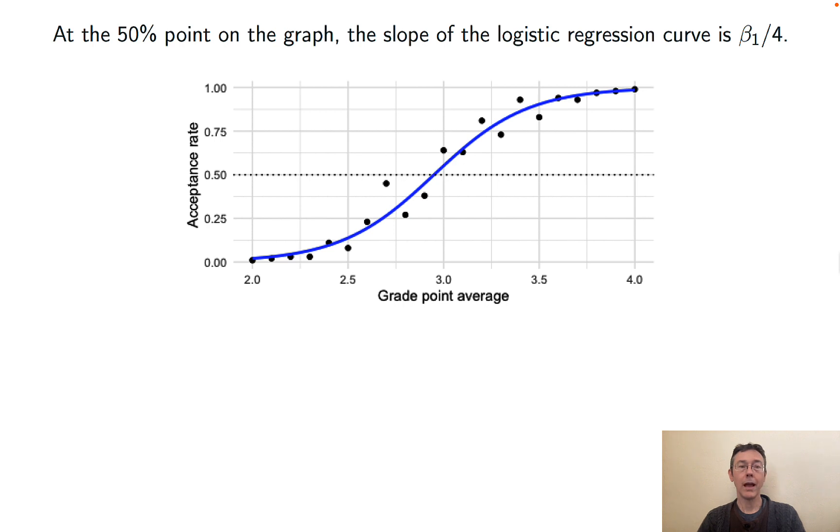Moreover, at the 50% point on the graph, the slope of the logistic regression curve is beta 1 over 4. By the 50% point on the graph, I mean where the response variable proportion is at 50%. And I've represented it here with a dotted line, and you can see it's halfway up the graph vertically.